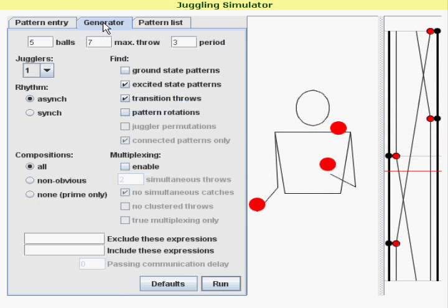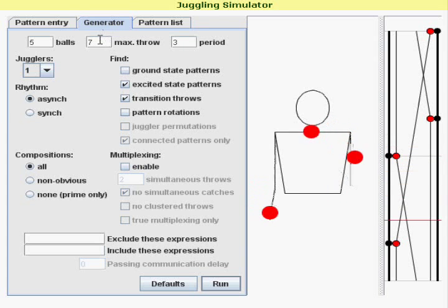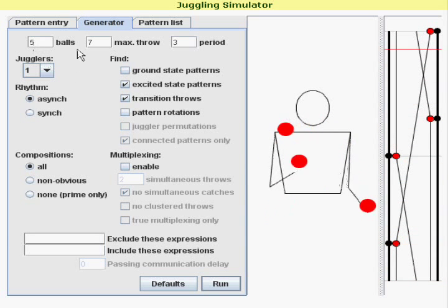To get things started, we're going to go to our generator and generate a random excited state 5-ball siteswap. Make sure everything's okay, we got 5 balls, I don't want to throw anything higher than a 7 here. We're going for a period 4 siteswap and we want it to only show the excited states and the transition throws as well. Asynchronous pattern.